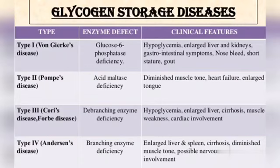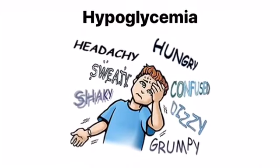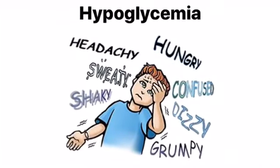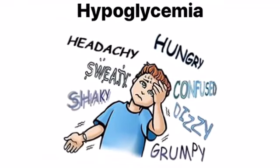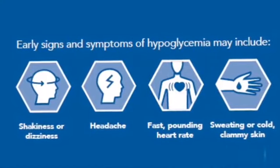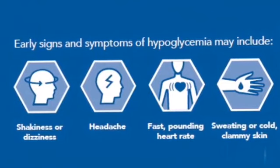Treatment will vary depending on what type of GSD you have, but usually you must follow a special diet and take certain medicines. Another disease that can occur is diabetic hypoglycemia, which is low blood sugar, and here you have some of the symptoms associated with this disease.